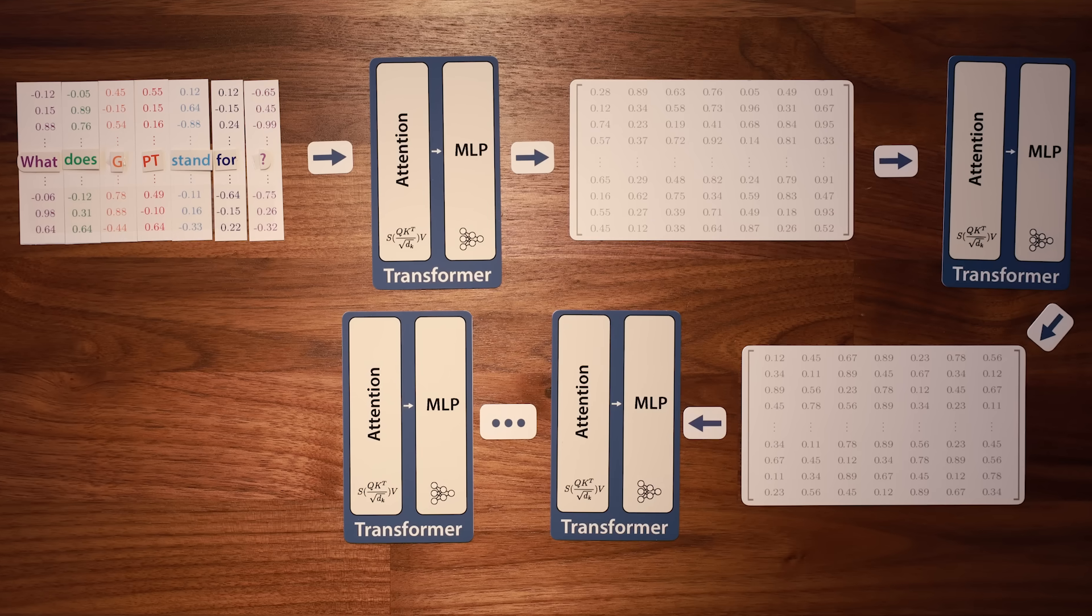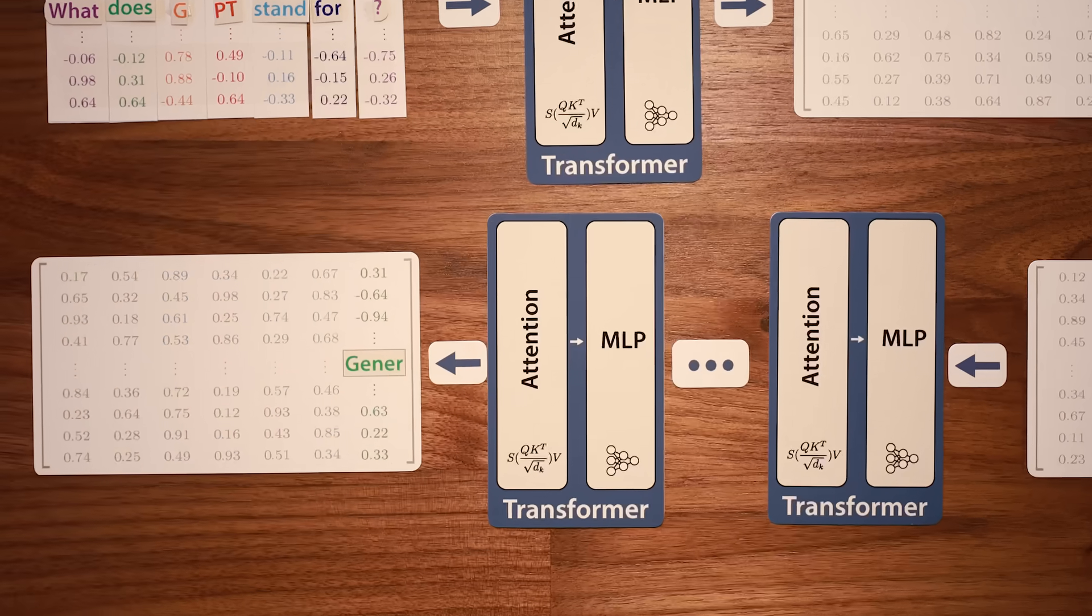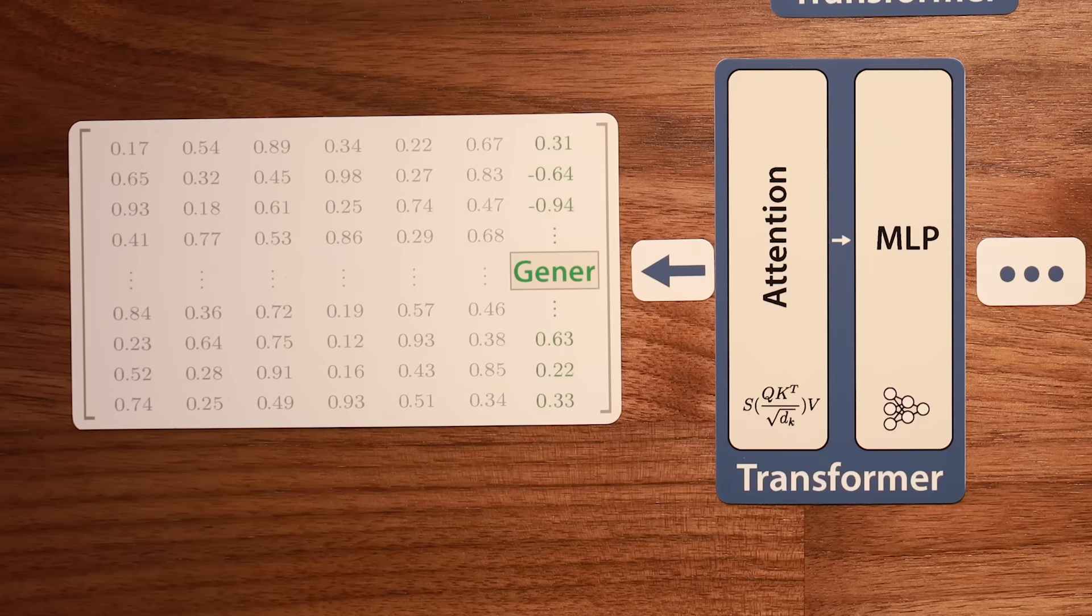Now, here's the absurd part. With a few caveats, the next word or word fragment that ChatGPT says back to you is literally just the last column of its final output matrix, mapped from a vector back to text.